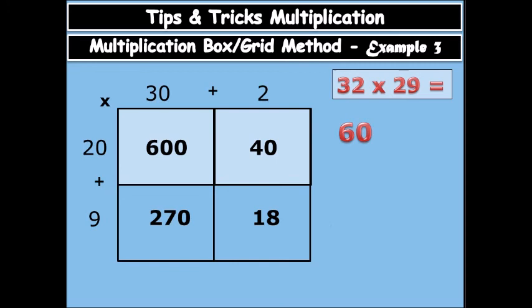So you add them all up. You have 600 plus 270 plus 40 plus 18.